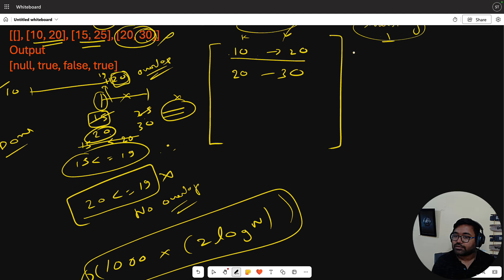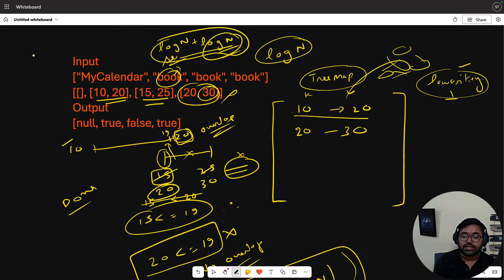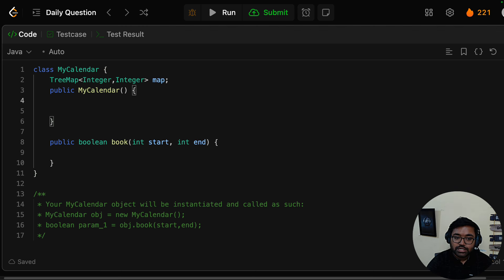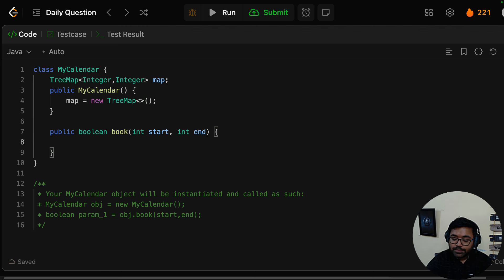So we will start by creating a TreeMap of Integer, Integer. Let's call it map. MyCalendar is a constructor where we will initialize map equals new TreeMap. By default it's sorted in increasing order.